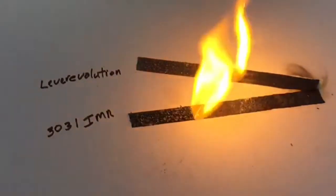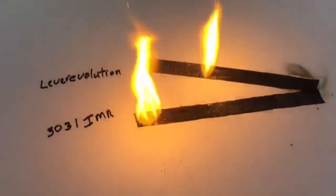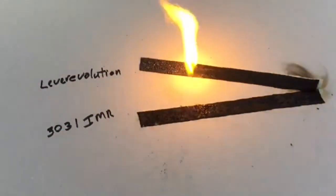You can see that the old 3031 is burning a whole lot faster, so that nice push that you get with the lever-lutionary is coming from the slower burn I suspect.